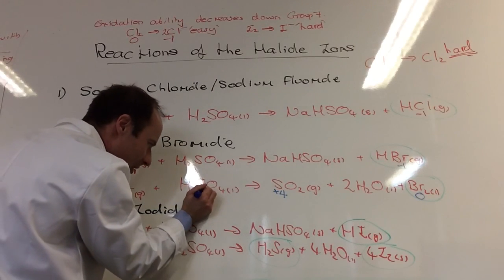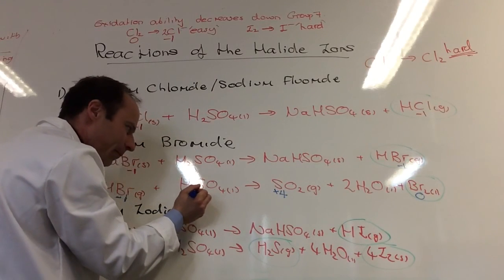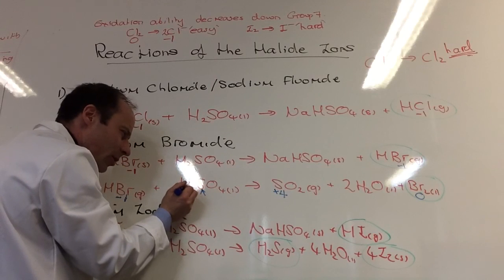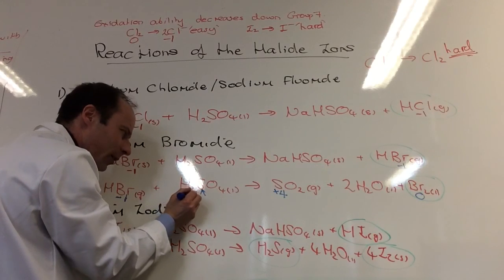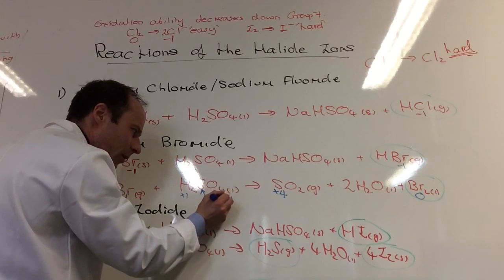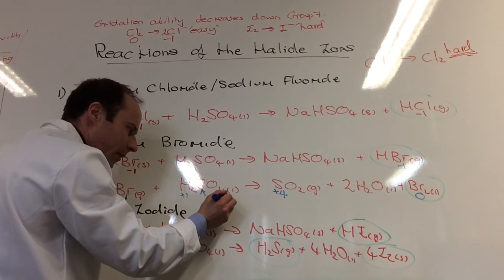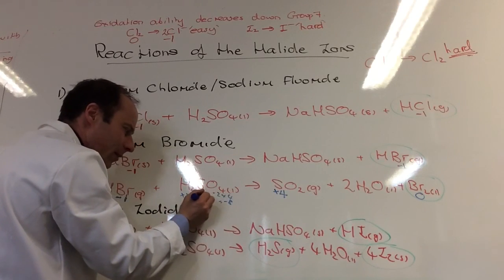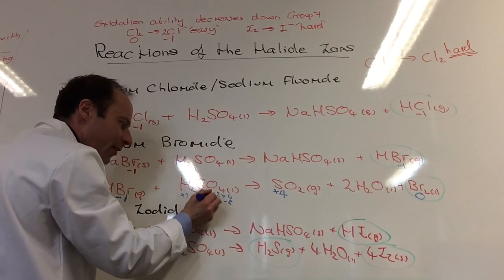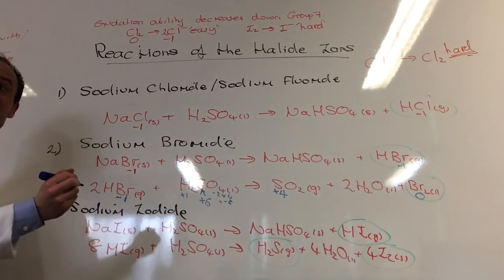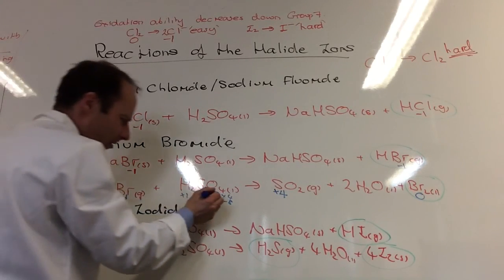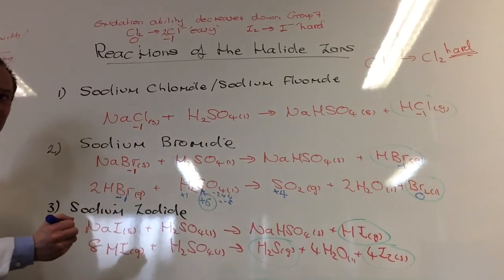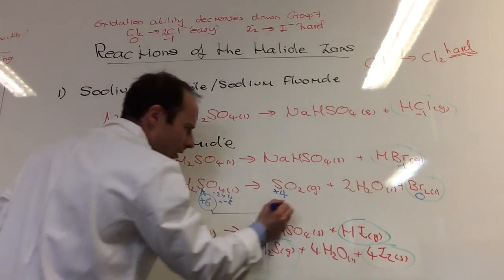What would be the oxidation number of sulfur there? Could be quite difficult. Hydrogen is going to be plus one. Oxygen is minus two. So. Yeah, you're right. So it should be plus six. We're in a supportive learning environment. We're plus six, two, plus four.